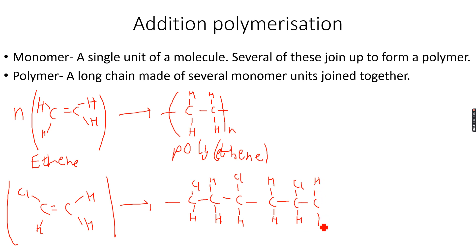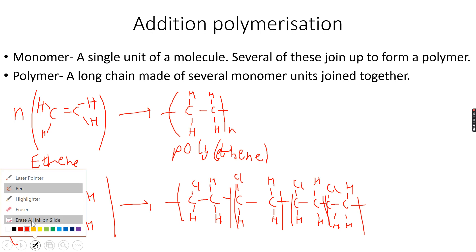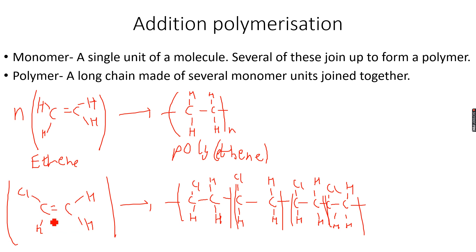We keep going on like this, so we can draw as many repeat units as we want. If you want to count the number of repeat units here: one, two, three, and four — four repeat units in total. This is how we make these polymers.